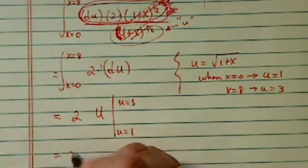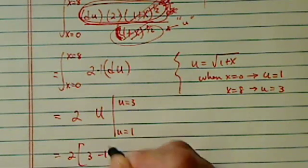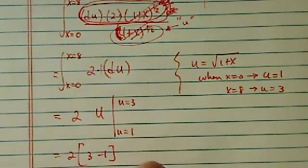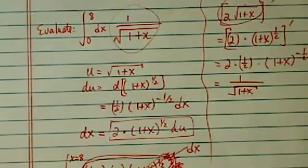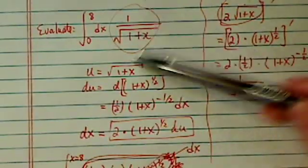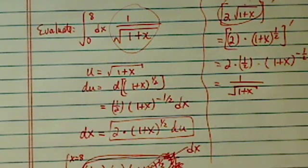Let's evaluate this one. This is 2 times 3 minus 1. So our final answer is 4. It's a really interesting problem. So that's how we evaluate this integral we're given. It's basically integral of 1 over radical 1 plus x. Hope it's clear.